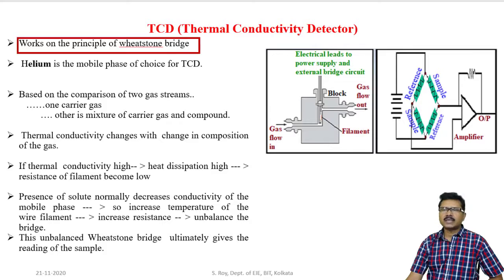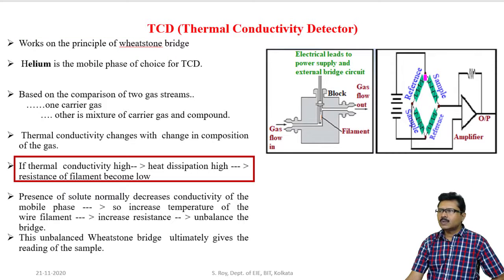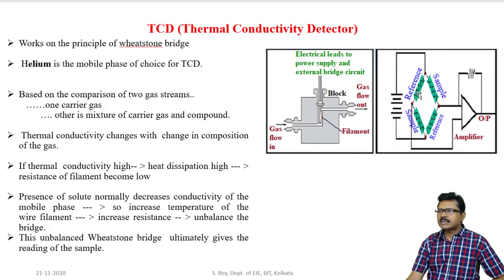This detector is based on comparison of two gases — one is carrier gas and the other is a mixture of carrier gas and compound. Thermal conductivity of different gases are different, so a change in composition of gas causes a change in thermal conductivity. For a resistive element, when current passes through a resistance, the temperature increases and it produces heat. If the conductivity of the surrounding atmosphere is higher, heat dissipation will be higher; if lower, heat dissipation will be lower. Using this property, the thermal conductivity detector produces output.